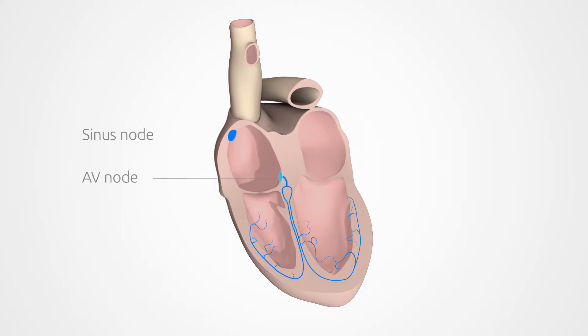The AV node, between the atria and the ventricles, receives signals from the sinus node and passes them on to the bundle of His, a short section of the pathway.